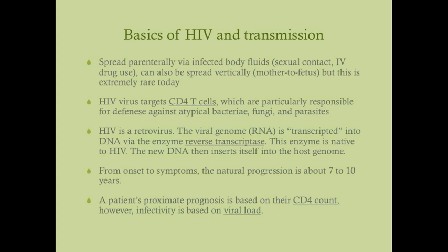From onset to symptoms, the natural progression is about 7 to 10 years until opportunistic infections begin to develop. A patient's prognosis is based on their CD4 count, while infectivity is based on their viral load. The CD4 count reflects how well the immune system can fight pathogens, and the viral load — similar to a viral RNA count in hepatitis C — indicates how likely the patient is to infect others.